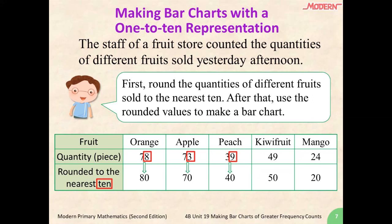For mango, the units place is a 4, which is between 1 to 4, so this time we will round down and the tens place remains unchanged.